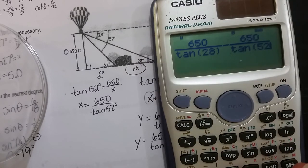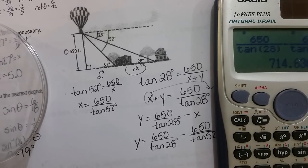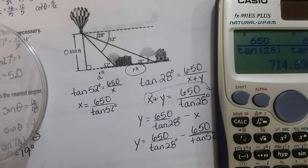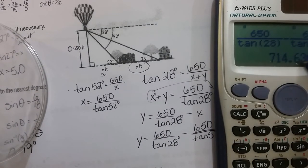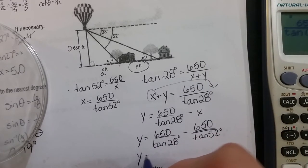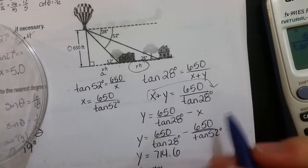And the answer here, it doesn't say what to round to. So we'll go ahead and since it's in feet, let's just round to the nearest tenth. So the Y value is 714.6 feet.